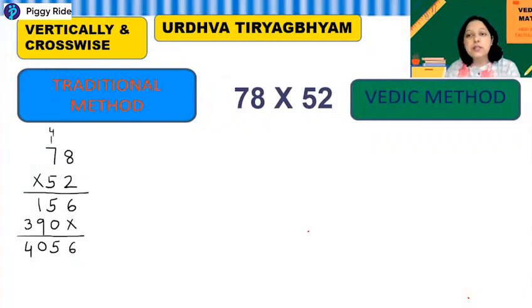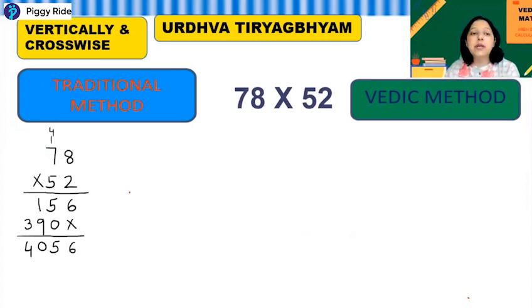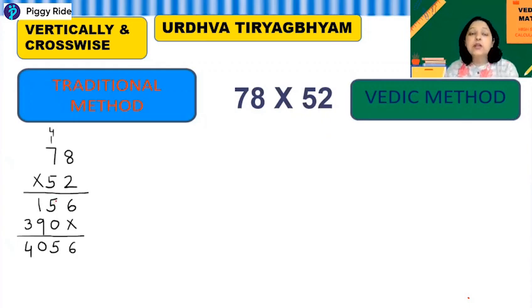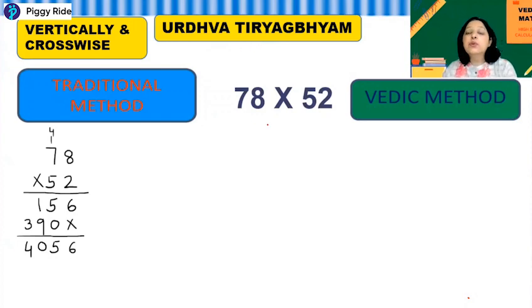In today's class we will learn some interesting concepts of multiplication. I have done one example of multiplication where I multiplied a two-digit number with another two-digit number by the normal school method. Now I will teach you how to do this quickly in a few seconds with the help of Vedic maths. The sutra we will apply is called Vertically and Crosswise, also known as Urdhava Tiryak.